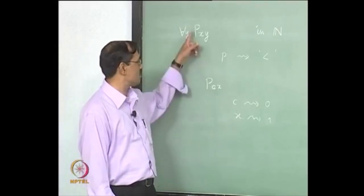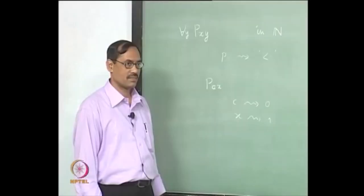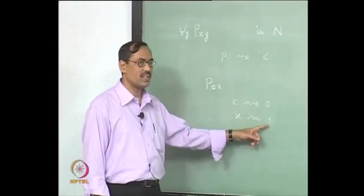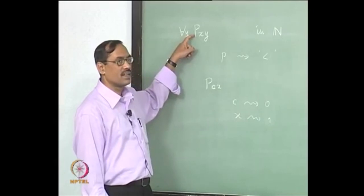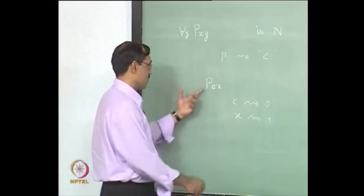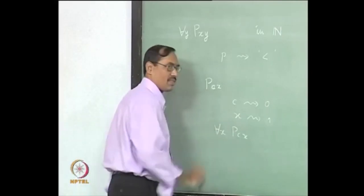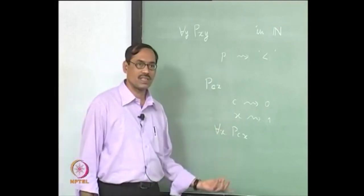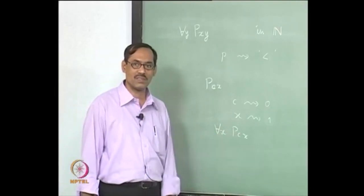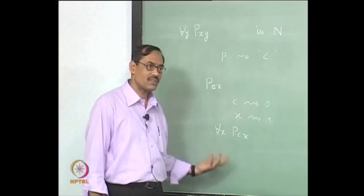So this is what we are planning to do: not only associate the predicates, but also associate the variables and associate the constants, so that we will get some sentence in our interpretation or domain of interpretation. If you associate variables with these, how do you write 'for every y, P x y'? Or from the sentence 'for each x, P c x' — if x has been associated with 1 and c has been associated with 0, we can read this as '0 less than 1.' Then what is 'for each x'?